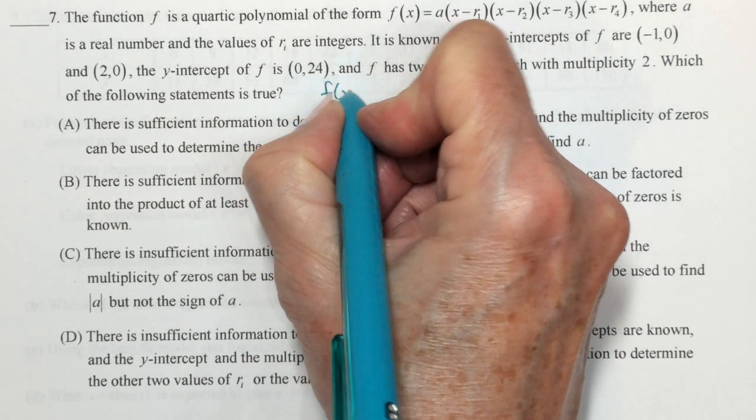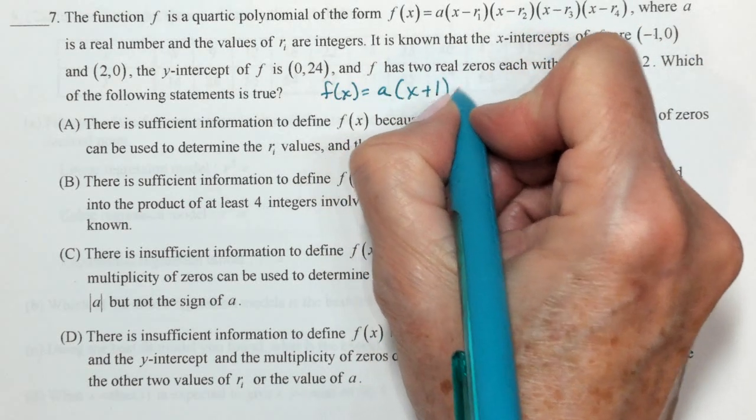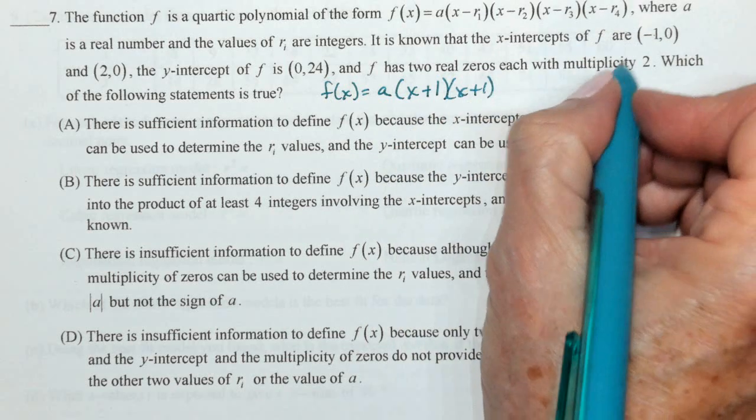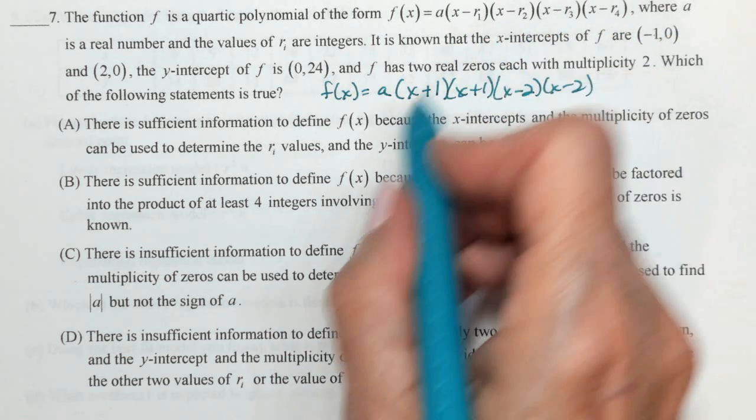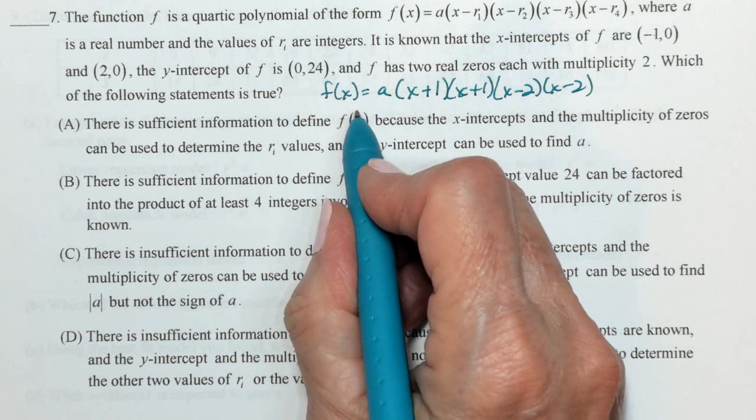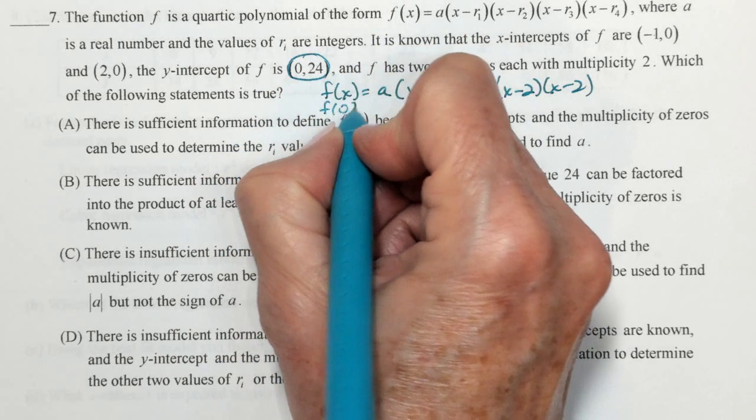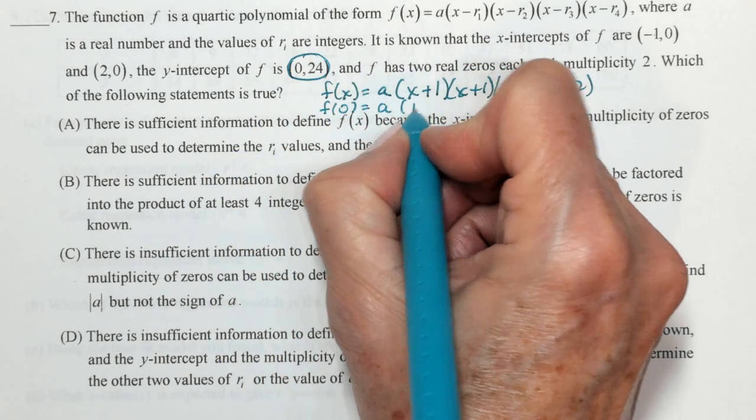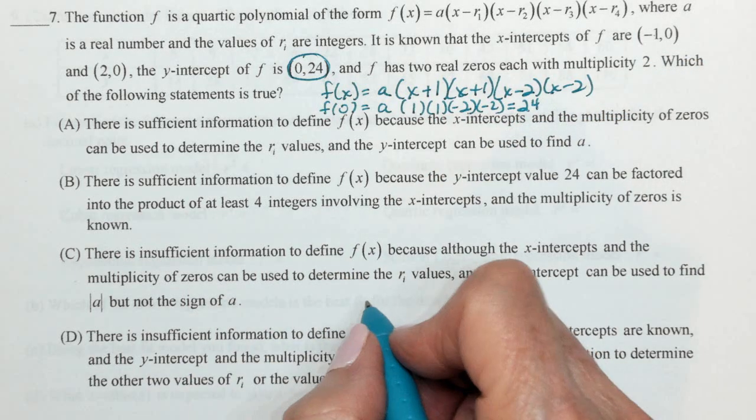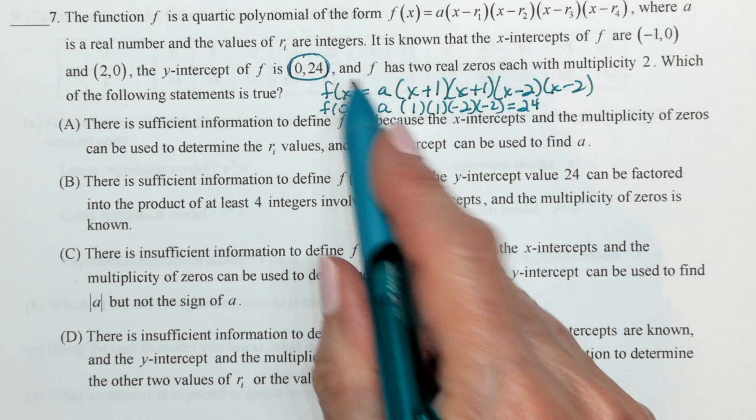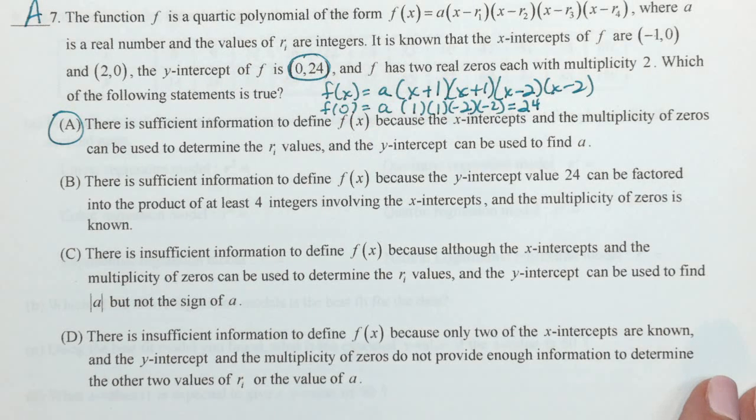Can we use, if we know, so I already know that f of x is a times x plus 1, times x plus 1, it's a double, right, multiplicity of 2, times x minus 2, times x minus 2. I have all of that part. Can I use the y-intercept to find the value of a? f of 0 is a times 1, times 1, times negative 2, times negative 2, and they tell me that that is 24. Can I find a? I certainly can find a, which means I can find f.